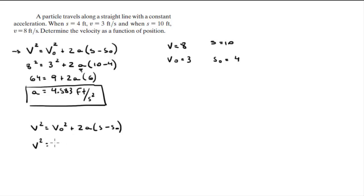So v we're going to leave alone, v naught we're still going to use the 3 squared plus 2 times a, which we found out to be 4.583, and s minus 4. We're trying to find the velocity as a function of the position.